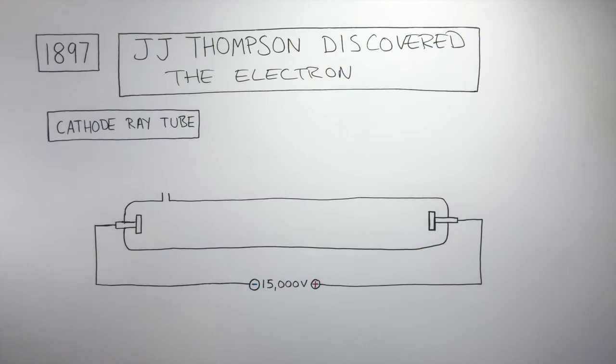He did this by setting up a cathode ray tube, which is a glass tube containing gases at low pressure. This low pressure was achieved using a pump which sucked the air out of the glass tube.